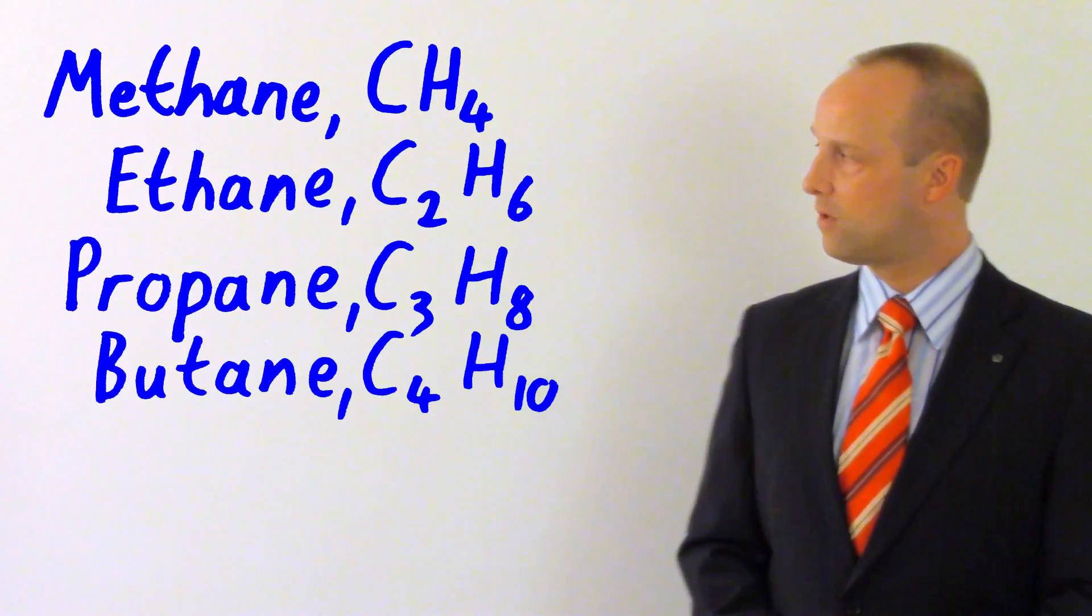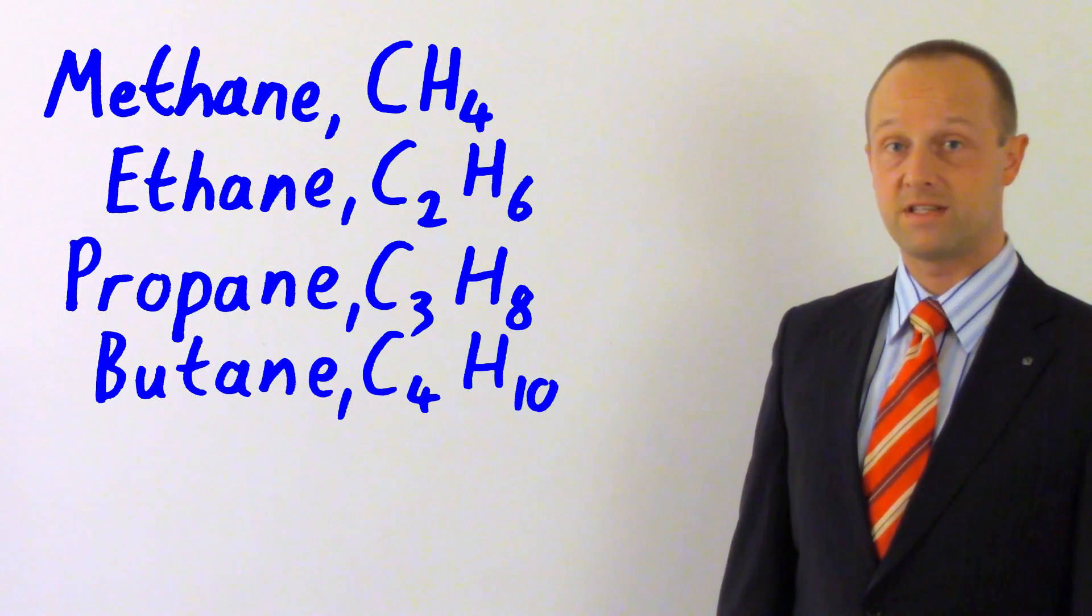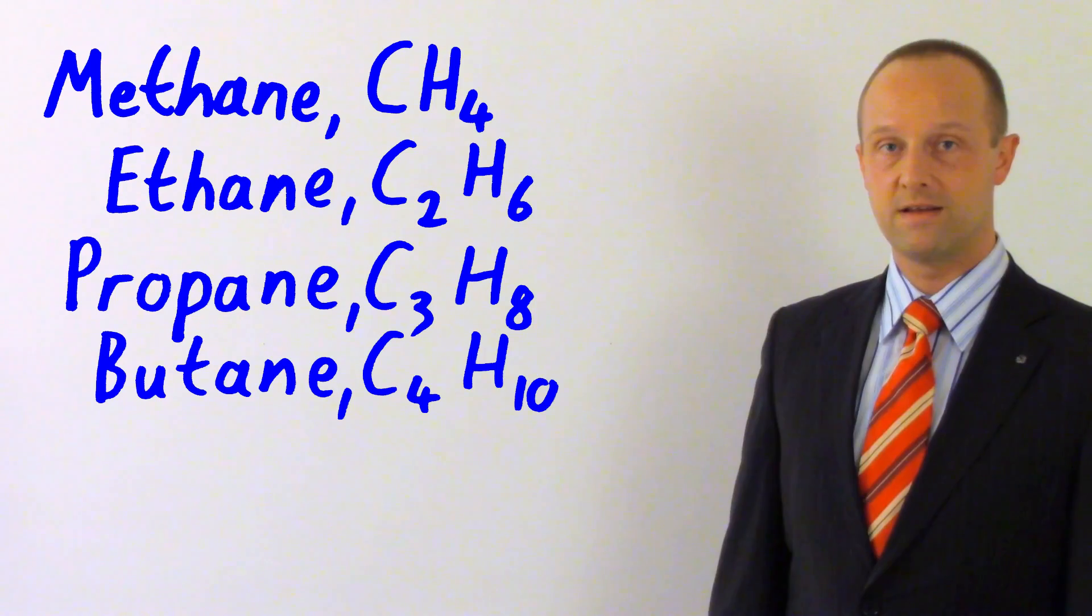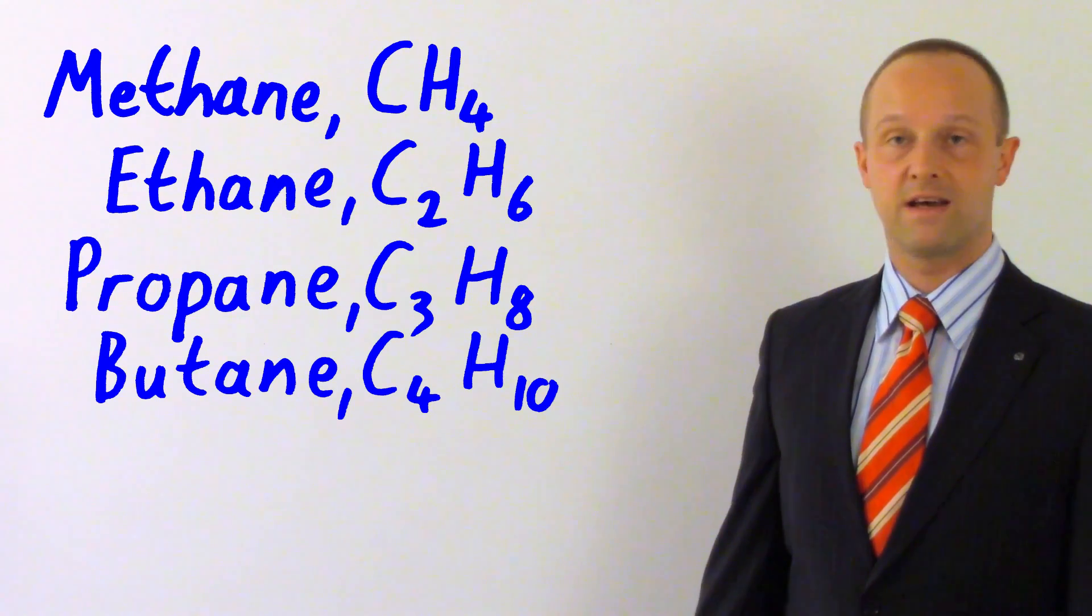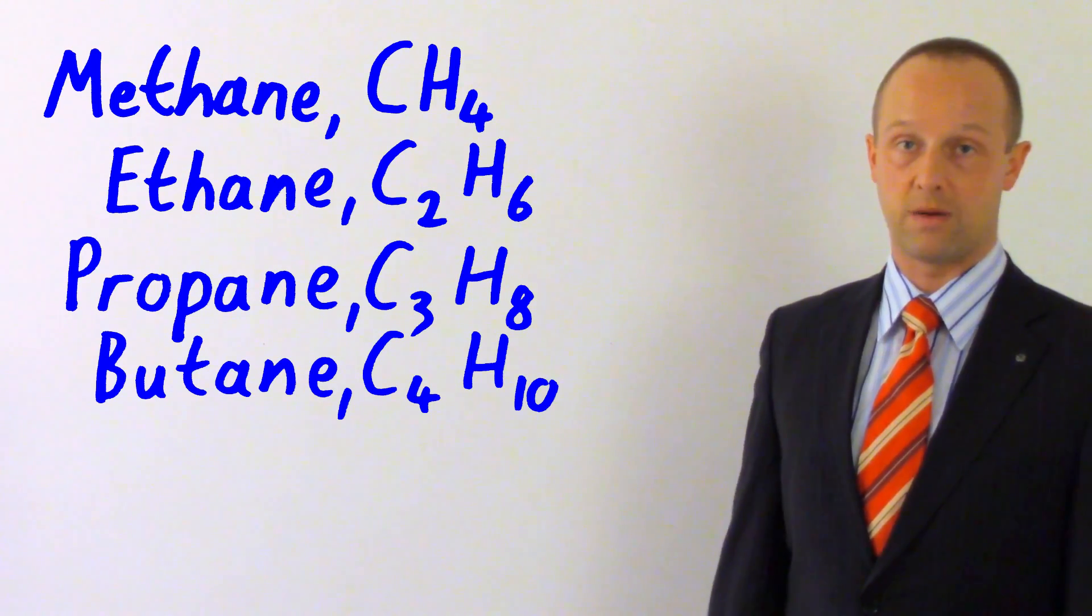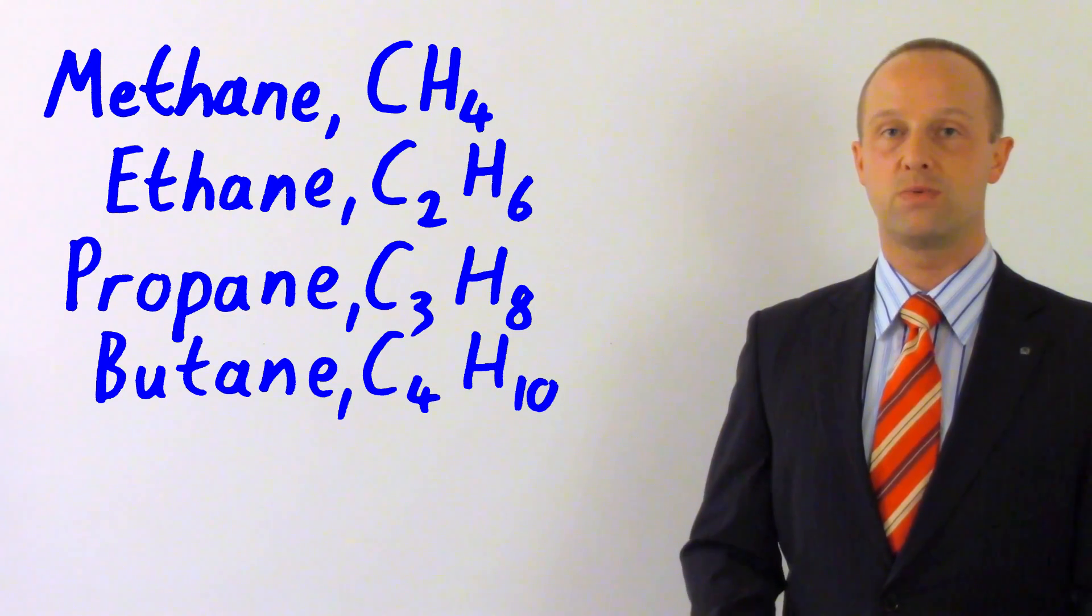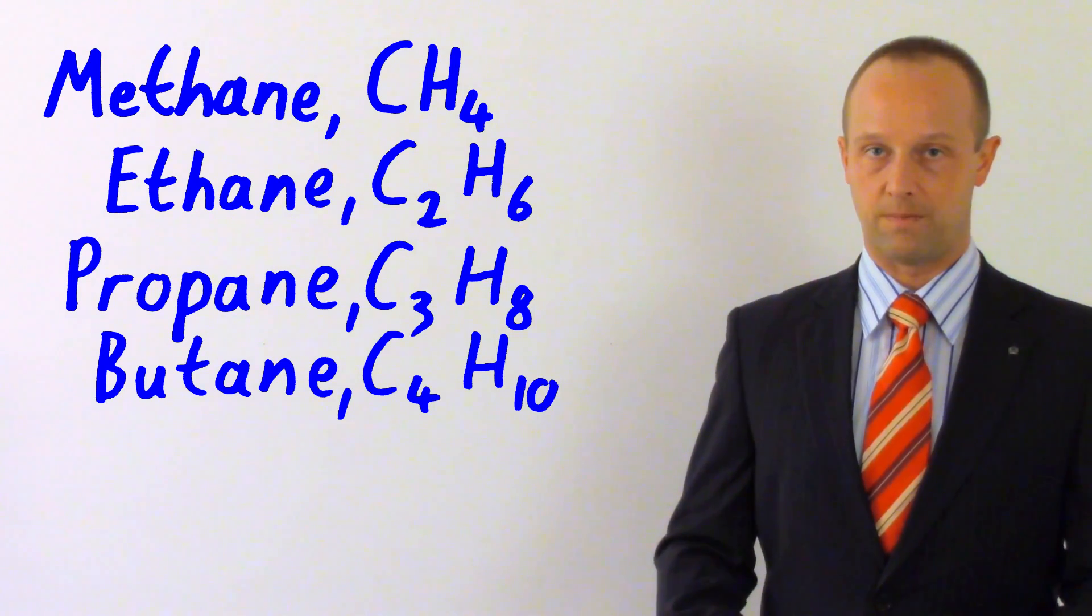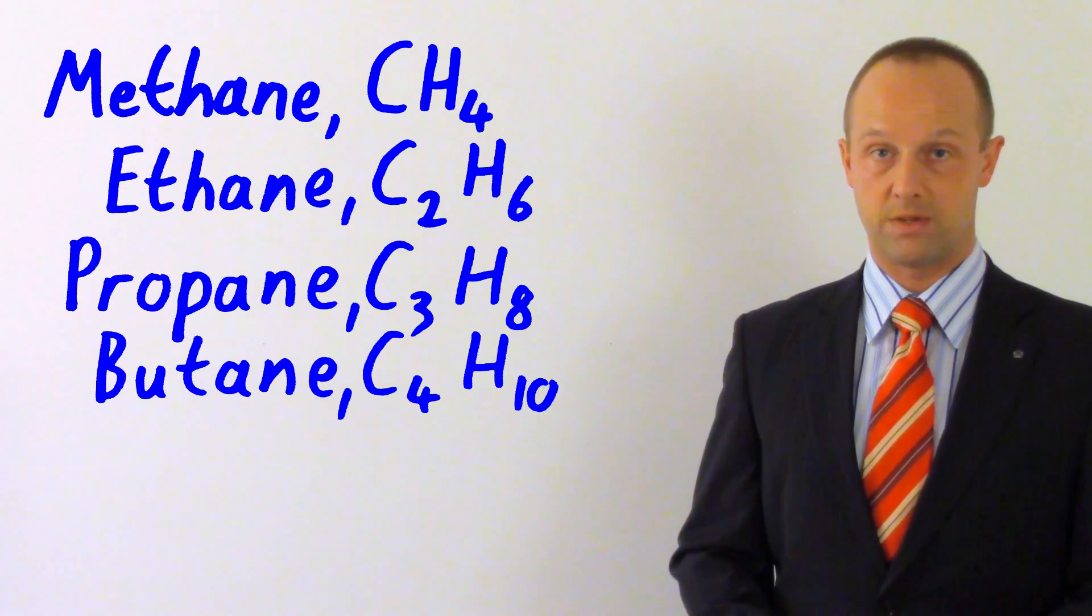Let's look at the chemical formula for each of these alkanes. For methane, we've got CH4, one carbon and four hydrogens. For ethane, it's C2H6. For propane, it's C3H8. For butane, it's C4H10. You can see that as we increase the number of carbons by one, we're also increasing the number of hydrogens by two.